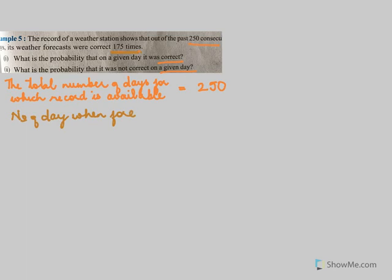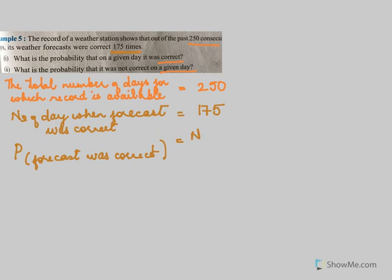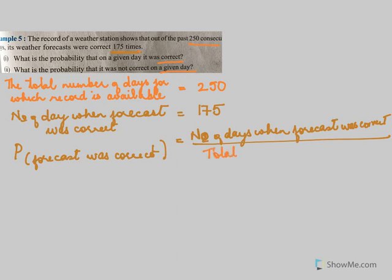What is the probability that on a given day the forecast was correct? The forecast of the right weather was 175. The probability of the forecast being correct equals the number of days for which the forecast was correct over the total number of days.